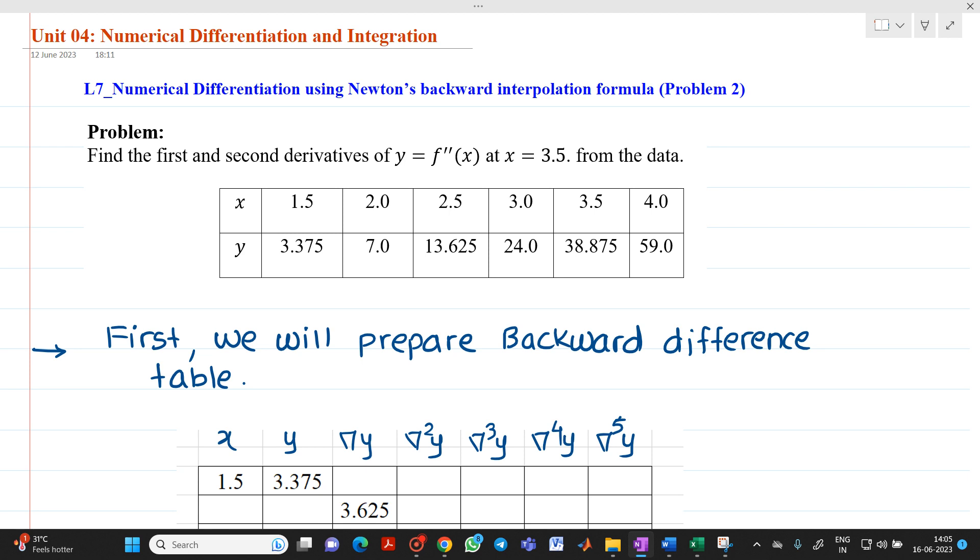Let us consider this data we have given x and y, and we have to find out first and second order derivative at x equal to 3.5. So if you see, we have given xn will be equal to 3.5.